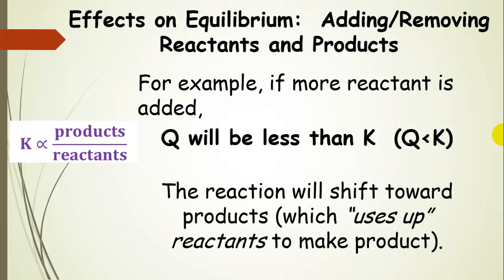What happens if we add or remove reactants and products? If we add more reactant, let's look at our equilibrium constant expression — the simplified version with products over reactants. If we add reactant, then Q is going to be less than the equilibrium constant K. We have too many reactants, so the reaction is going to shift toward products in order to use up those added reactants. It moves in the opposite direction to what we did — toward products to use up the excess reactants and get back to equilibrium.